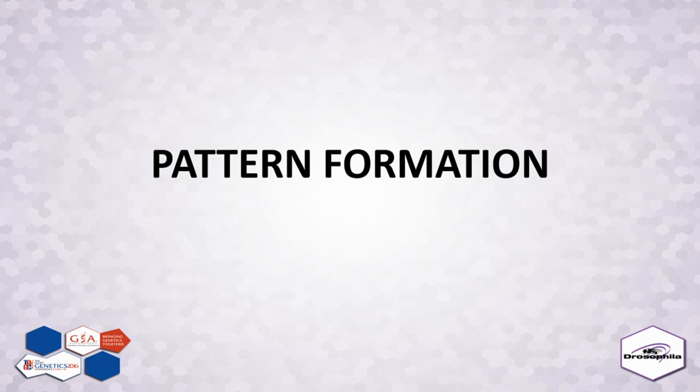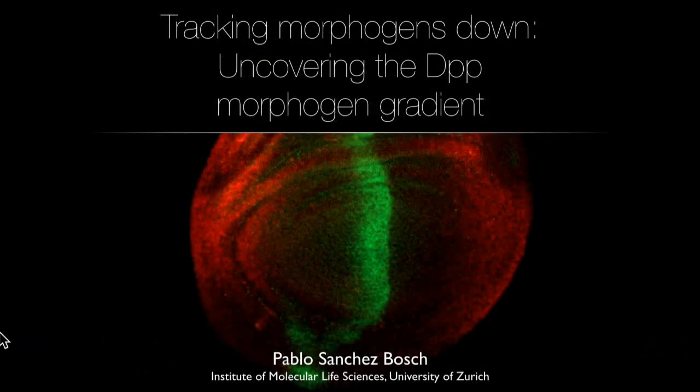Next speaker is Pablo Sanchez-Bosch, talking about tracking morphogens down and covering the DPP morphogen gradient. Thank you all for coming, and I also wanted to thank the organizers for giving me the opportunity to present my work here. It's a pleasure to show my latest results in this project in which I want to understand how the morphogenetic gradient of DPP is established in the wing disk.